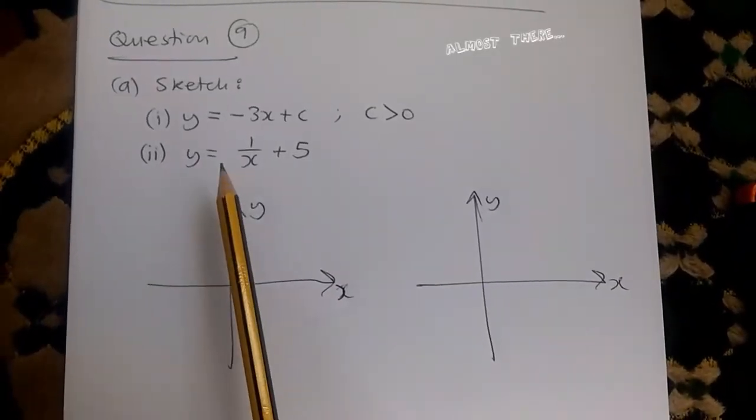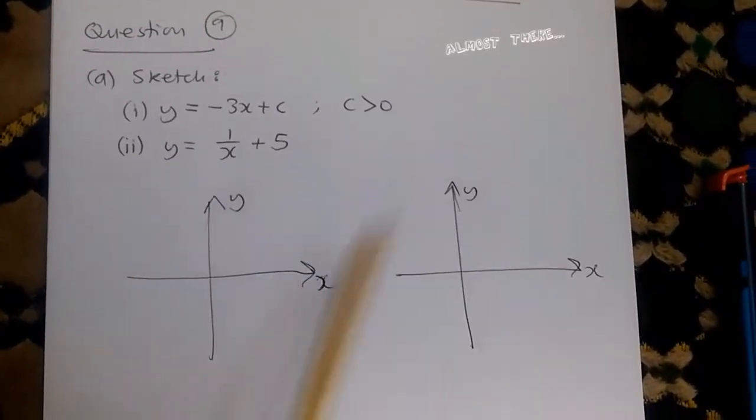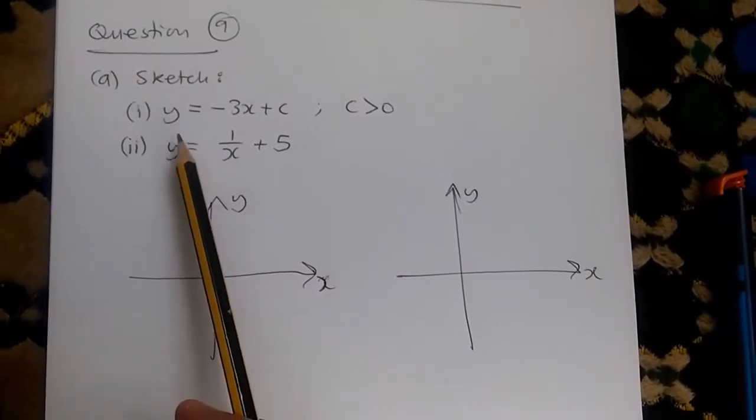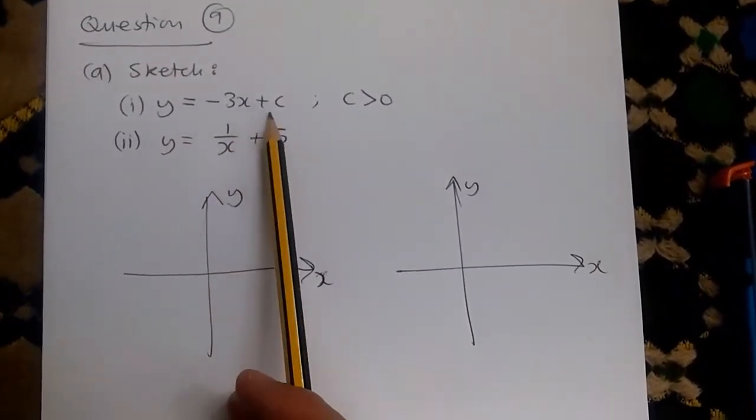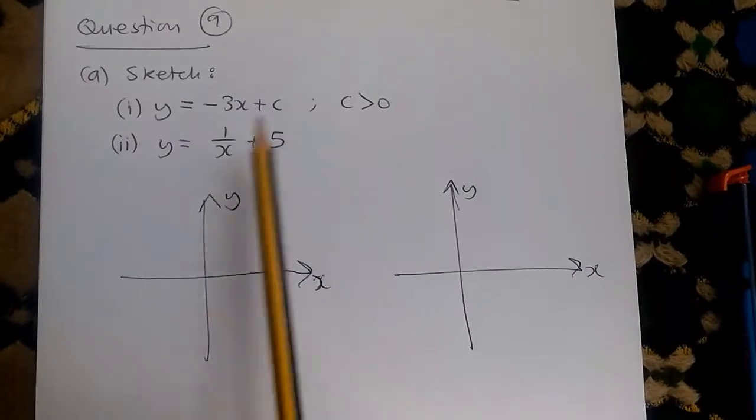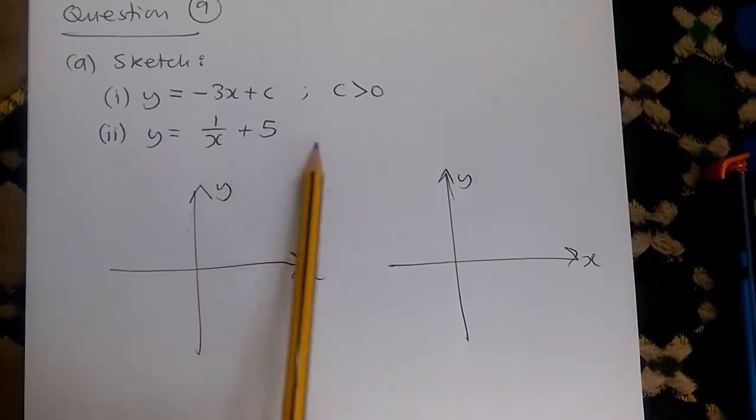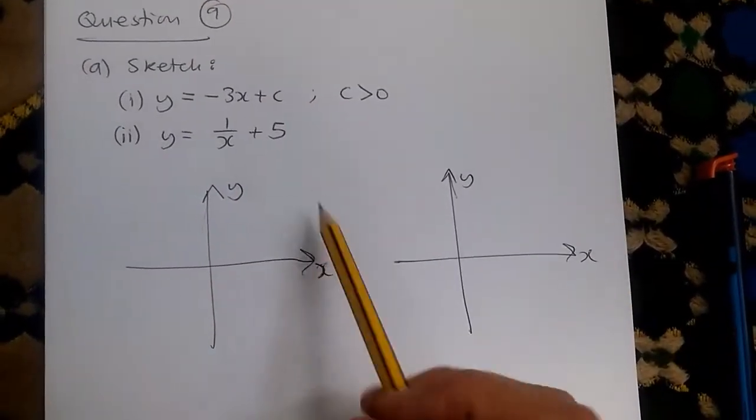So in this equation, we are told to sketch on separate diagrams the graphs of y equals minus 3x plus c, where c is a positive constant, and y equals 1 over x plus 5. So, without further ado, let's go.